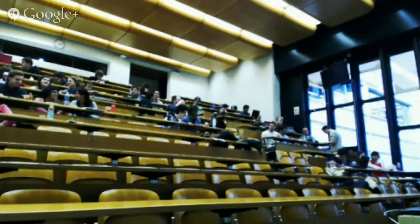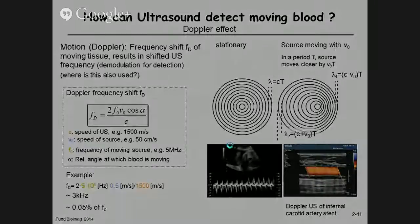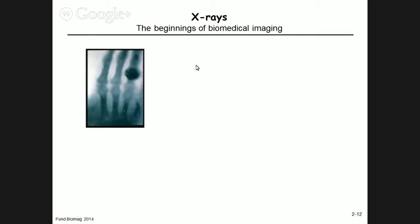We're going to continue this course with the second part, leaving ultrasound imaging and coming to x-ray imaging, which is a different beast. Today we're going to work with some definitions and ask ourselves how x-rays are produced. X-rays are the very beginning of biomedical imaging.